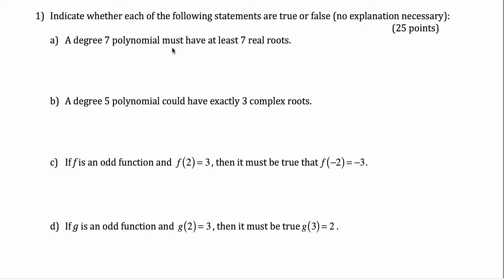The first one says a degree seven polynomial must have at least seven real roots. That is a false statement. You could make it true by changing 'at least' to 'at most.' A degree seven polynomial — the sum of the multiplicities of its roots must equal exactly seven, but those roots could be real or complex. So you don't necessarily know it has seven real roots. This is definitely a false statement.